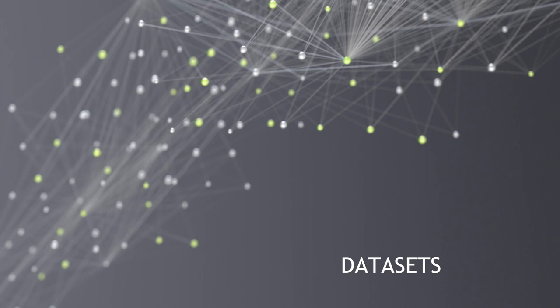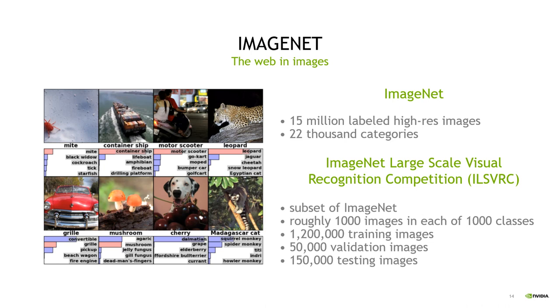Let's talk about datasets used in the visual domain. You might have heard of ImageNet, which is a collection of 15 million labeled high-resolution images with 22,000 categories. But whenever you read ImageNet in the press, they usually talk about the ImageNet Large-Scale Visual Recognition Competition dataset, which is only a subset of ImageNet, containing roughly 1,000 images in each of 1,000 classes. And if you multiply those two numbers, then you gain roughly a million training images. We also have 50,000 validation images and 150,000 testing images.